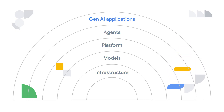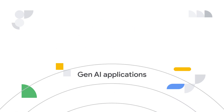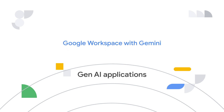You're likely most familiar with the Gen AI-powered application layer, as it's the user-facing part of generative AI, or the front-end. This is the layer that allows users to interact with and leverage the capabilities of AI. Examples of Gen AI-powered applications include the Gemini app, Google Workspace with Gemini, or Notebook LM.